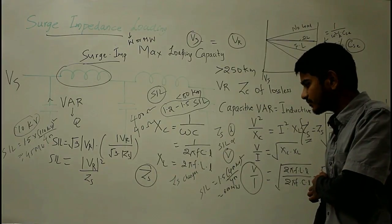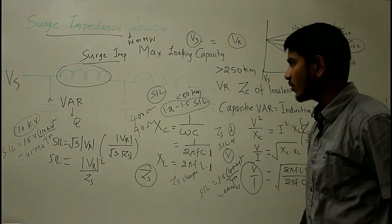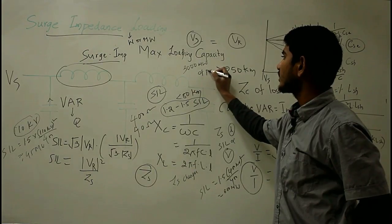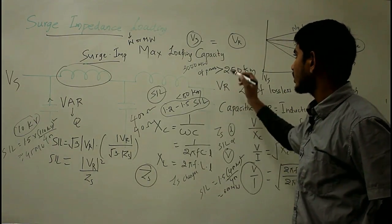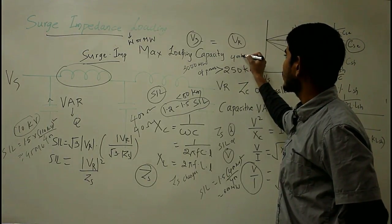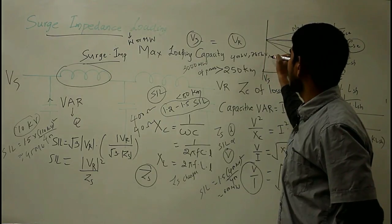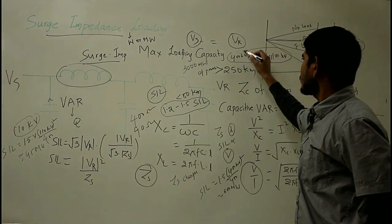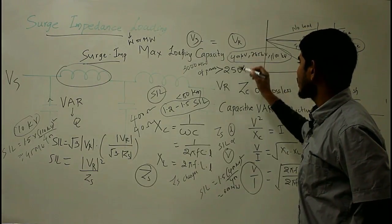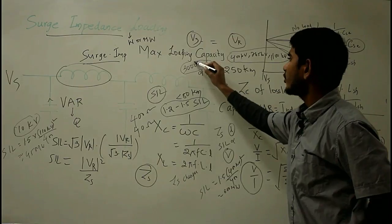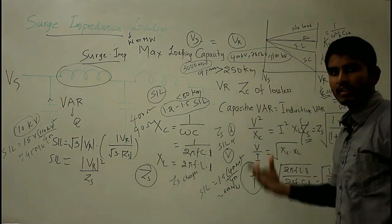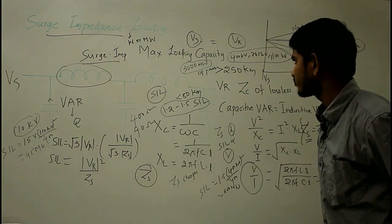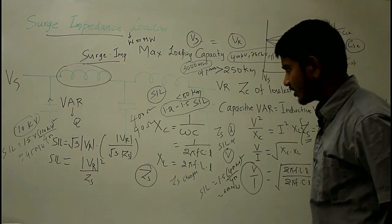For a 400 kV line, SIL = (400 kV)² / 400 ≈ 400 MW, and with a loading factor of 1.5 it is around 600 MW. For any given line voltage you can determine the loadability of the line. Alternatively, you can calculate the number of lines required to transfer a given power — say 3000 MW — at various voltages such as 400 kV, 765 kV, or 1100 kV.